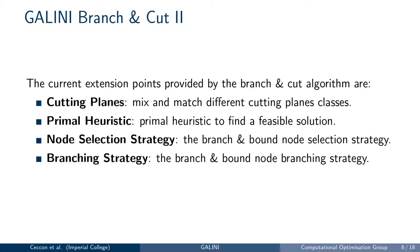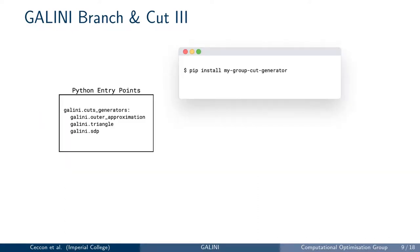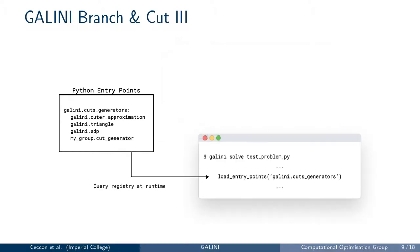The extension points we provide are what we think are the core components of a branch and cut algorithm. We include cutting plane generators used to generate cuts at each iteration of the cut loop, the primal heuristic used to find a feasible solution after solving the relaxation, and the node selection and branching strategies. To make Galini extensible at runtime, we use a system-wide registry of classes provided by Python, also known as entry points. After installing Galini, there are three cut generators shipped by default. When a user installs a new cut generator using pip, the package's entry points are registered to the central registry, and Galini can then load any combination of available cut generators based on the user configuration.